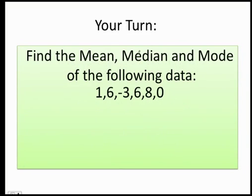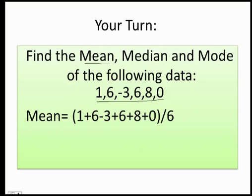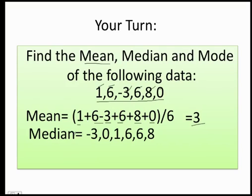Your turn. Find the mean, median, and the mode of the following data. Let's see if you can remember how to find the mean. Well, I'm going to give you one second and you tell me what is the first thing you should do. You got it. Add 1 plus 6 minus 3 plus 6 plus 8 plus 0 and divide it by 1, 2, 3, 4, 5, 6. Beautiful. 1 plus 6 is 7. 7 minus 3 is 4. 4 plus 6 is 10. 10 plus 8 is 18. 18 plus 0 is just 18. 18 divided by 6 is equal to 3.